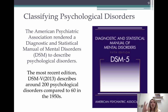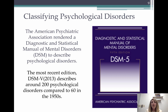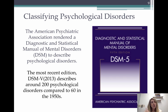Over time, each new edition adjusts based on our society, our norms, new information, and new beliefs. For example, homosexuality used to be in the DSM, but now that we have more information and understanding of the biological underpinnings of it, it's no longer labeled as a disorder. So things will be added and taken away based on how we understand different things in our society.